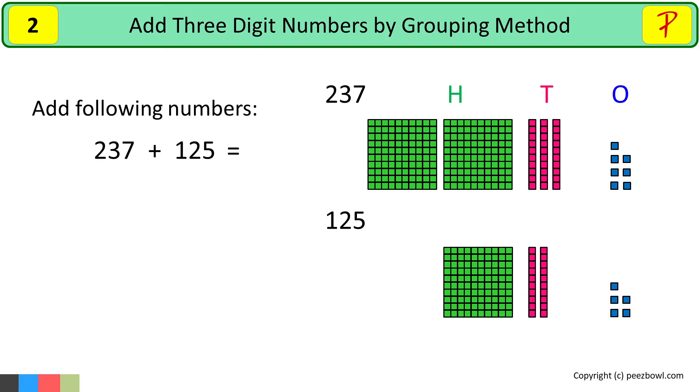Now we know that in addition, we bring all numbers together. Let us do it. We will start with ones place. So I will move seven ones from 237 below. Now at the ones place, we have 12 ones.